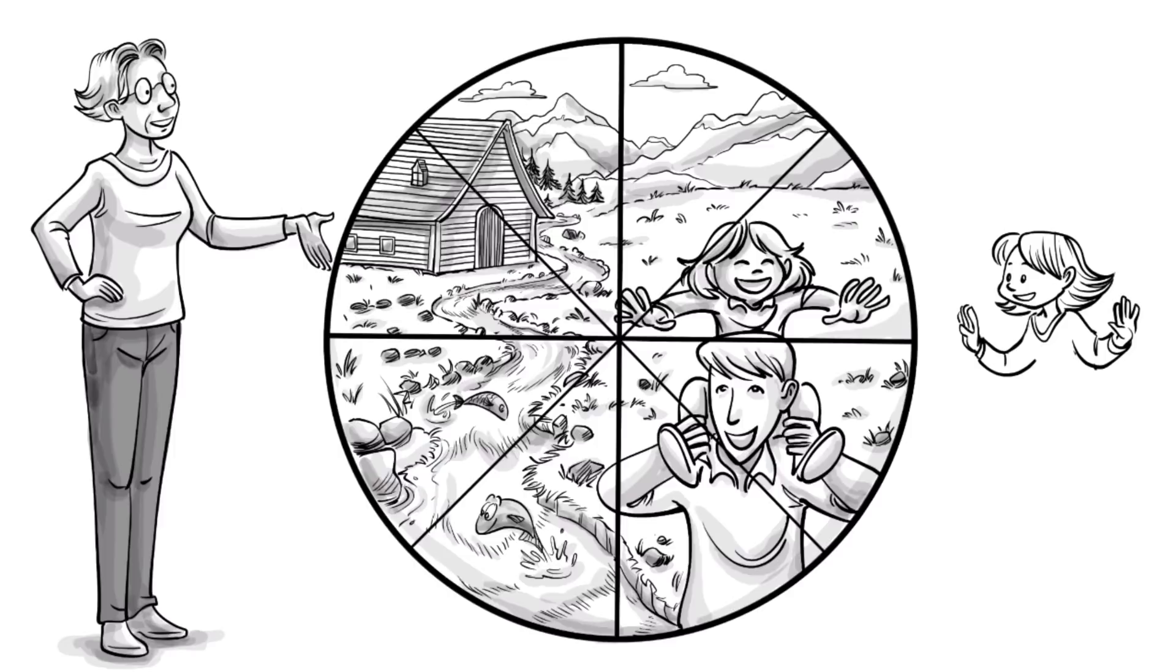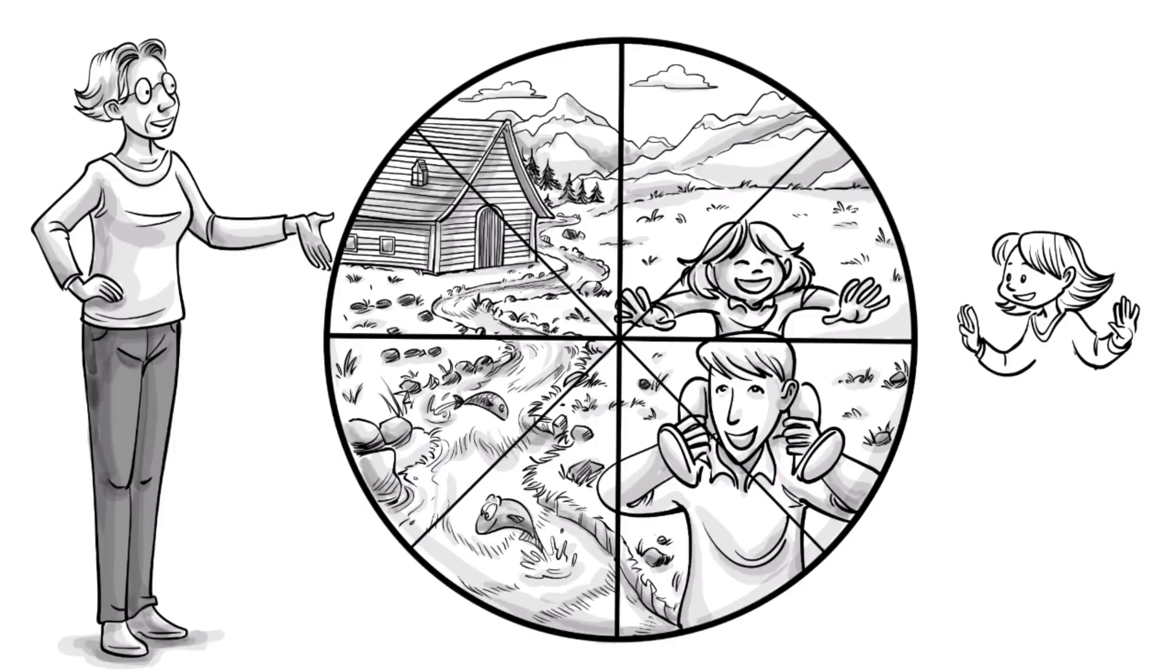Each of these four urges can be divided into two subcategories. To understand them better, let's look at the theory from the perspective of a young girl.